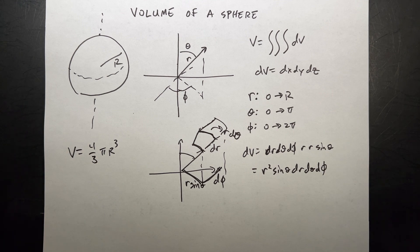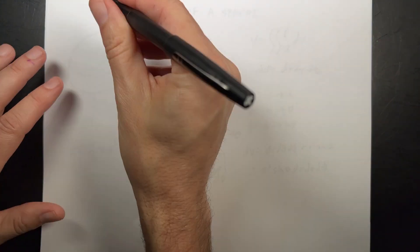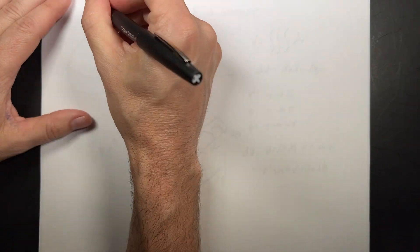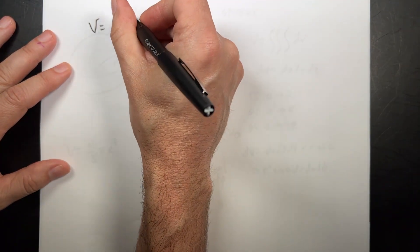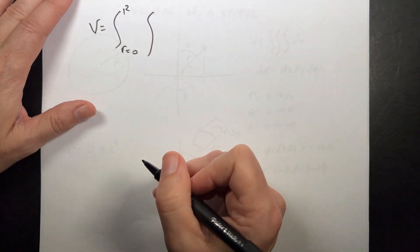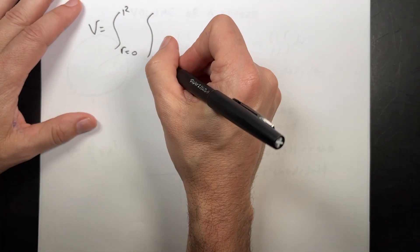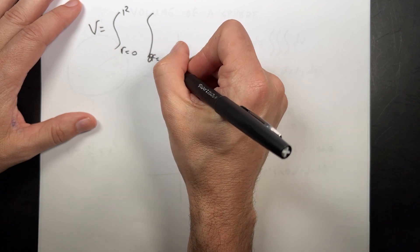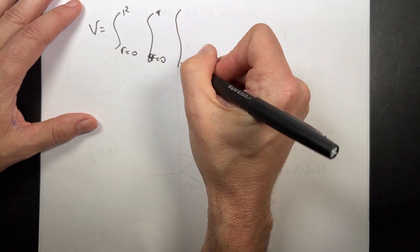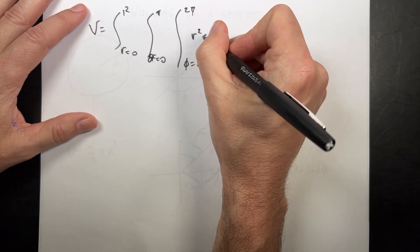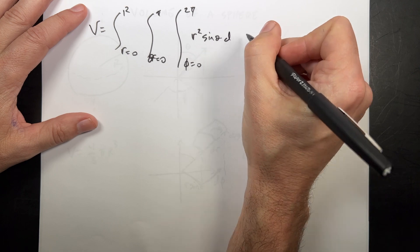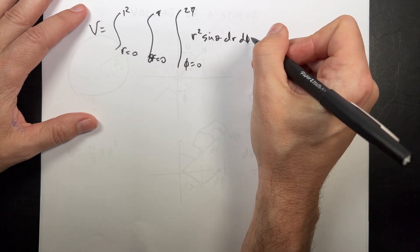So now the integral should be manageable. The volume is the integral from r = 0 to R, theta from 0 to π, phi from 0 to 2π of r² sin θ dr dφ dθ. I'm also doing this because I want to demonstrate the Python implementation at the end.